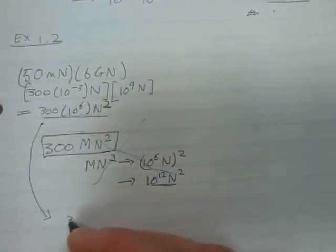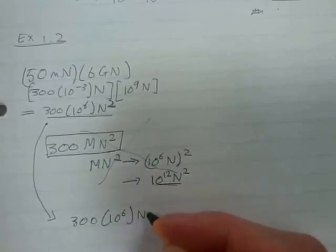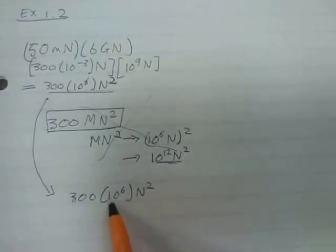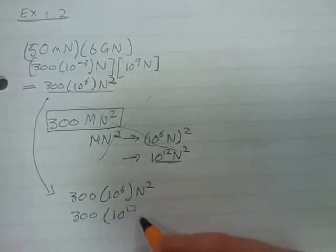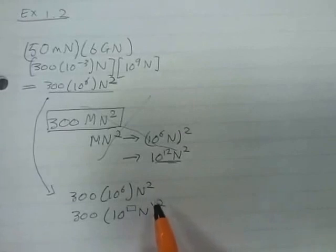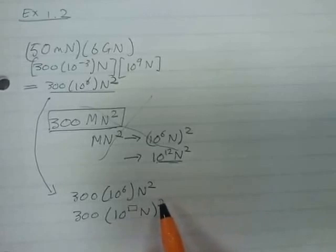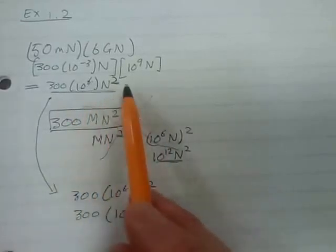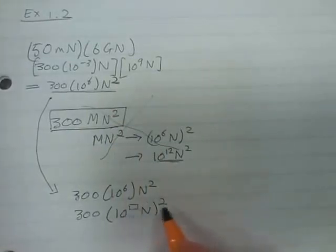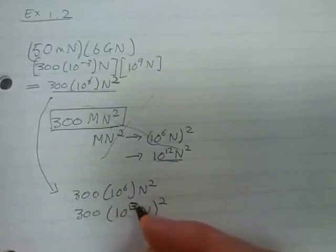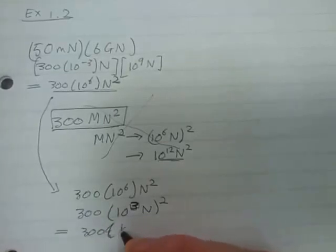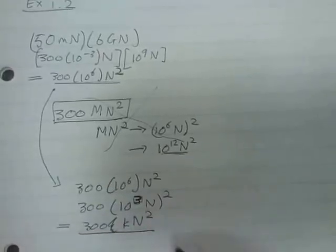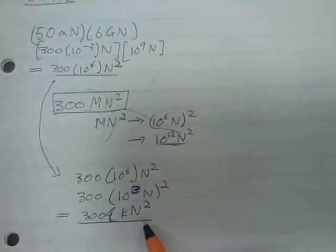We have 300 times 10 to the 6 newton squared and need to find the appropriate prefix. We ask: 10 to the power of what value, all squared, gives 10 to the 6? The answer is 3, since 3 times 2 is 6. So the correct answer is 300 kilonewton squared. Please take note of the way we solve these problems and try to practice them.